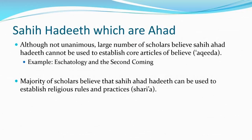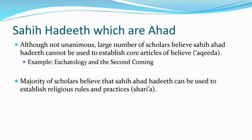Others have tried to take a more qualified position, saying there are conditions under which sahih ahad hadiths can be considered to convey certainty. Condition one: the hadith appears in Sahih al-Bukhari or Sahih Muslim. Condition two: the hadith is mashhur — meaning it comes with multiple chains of narration containing at least three narrators at each level, including at least three different companions and three successors at each subsequent level.